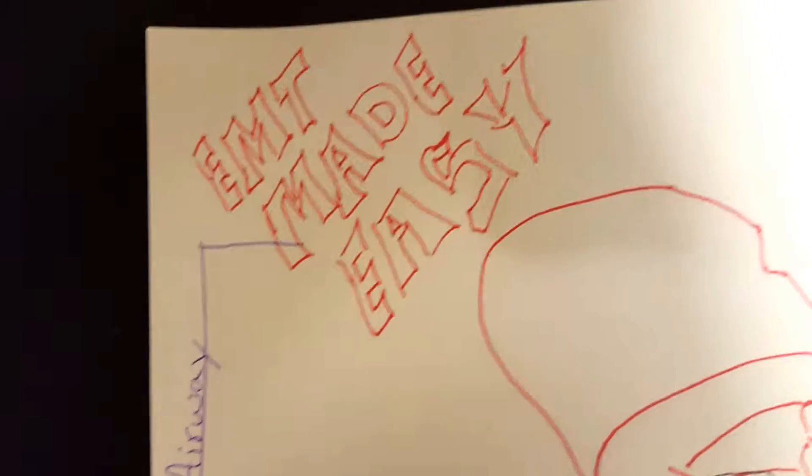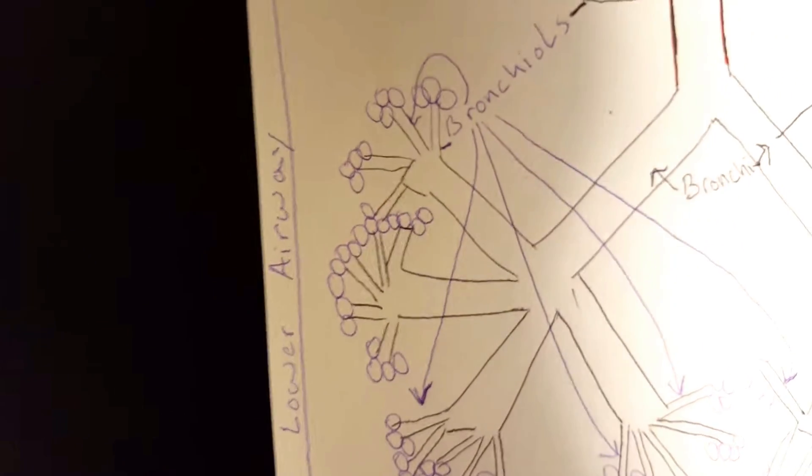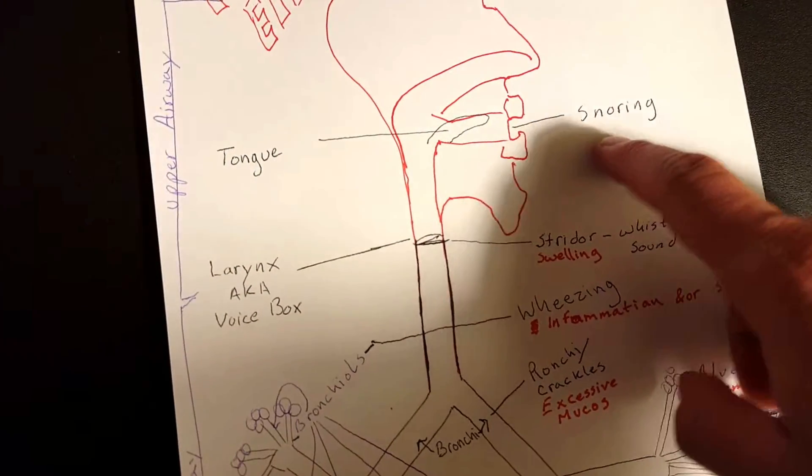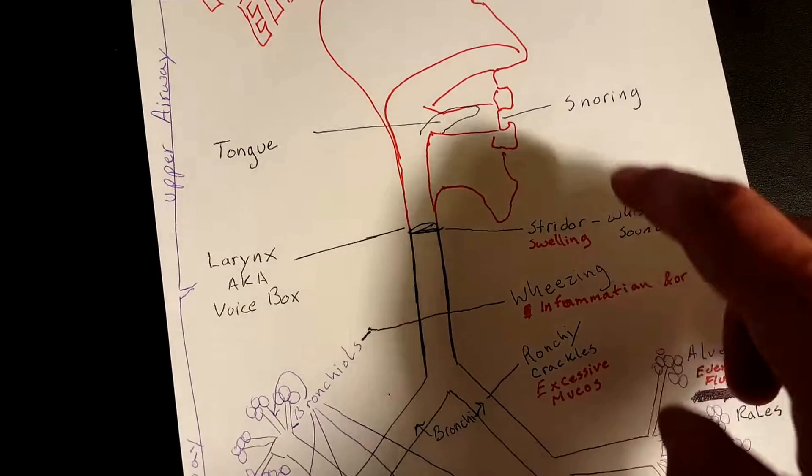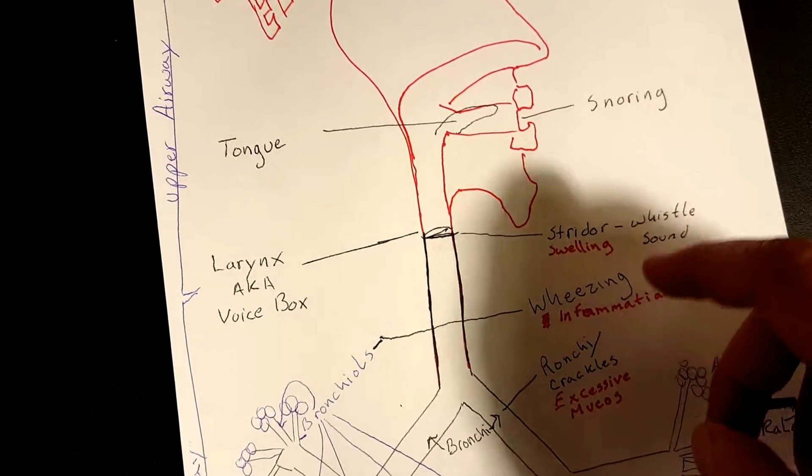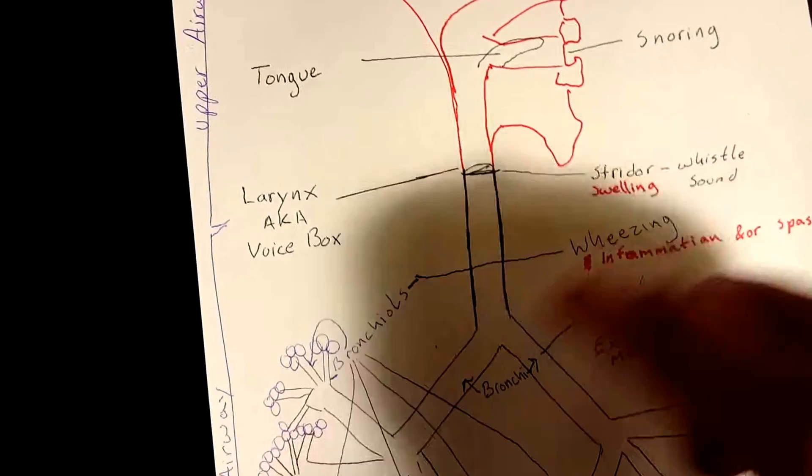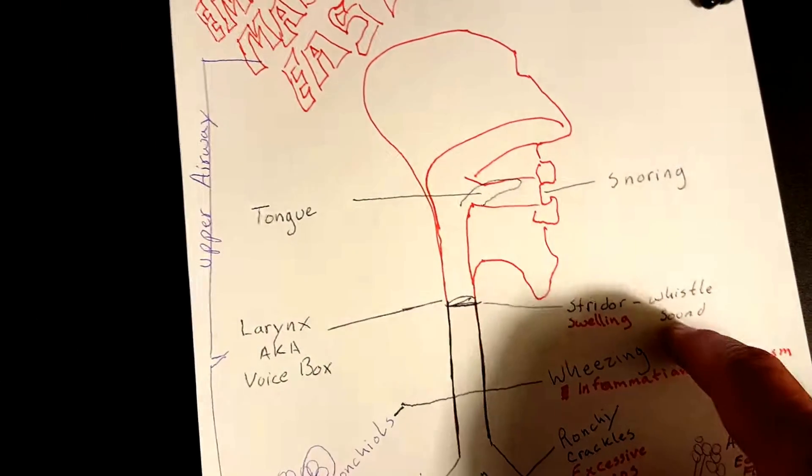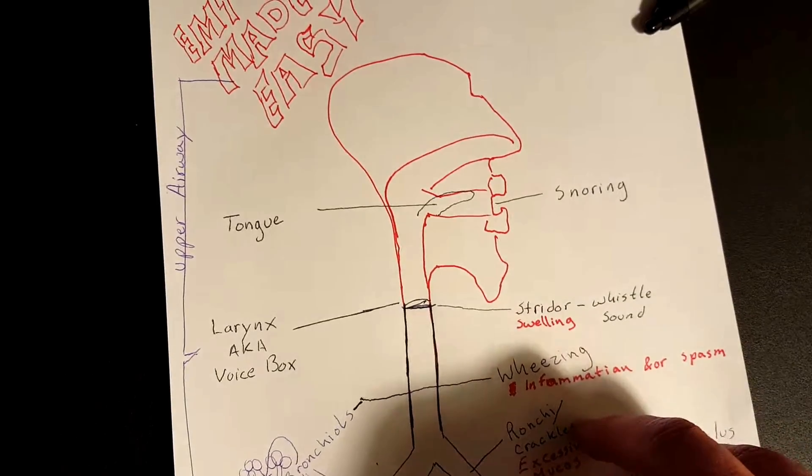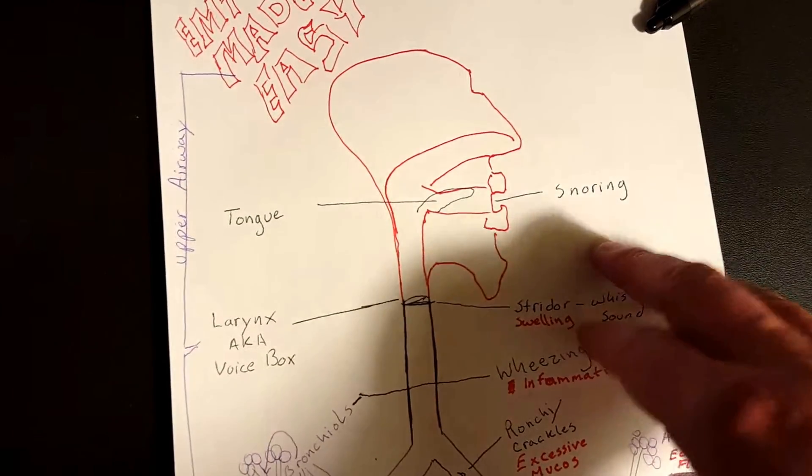All right, welcome back to EMT Made Easy. In this video I'm covering upper airway obstructions and lower airway obstructions. So what I'm really going to go over is, for example, snoring, stridor - what is it and where is it at? Is it an upper airway obstruction or is it a lower airway obstruction? If you want to actually know what they sound like individually, you can always YouTube it and figure that out. But for now I'm just going to cover what it is and where you can find it.